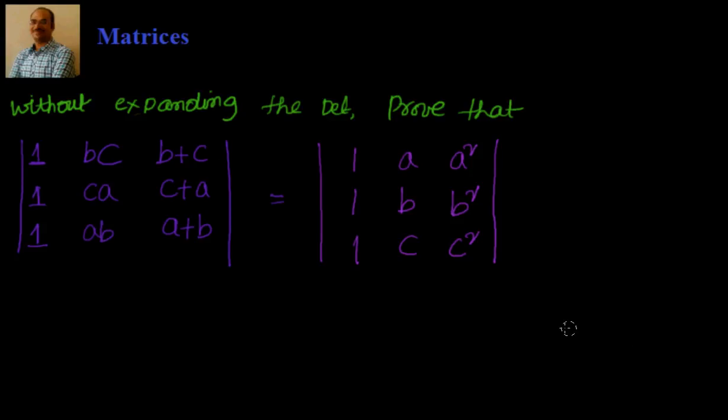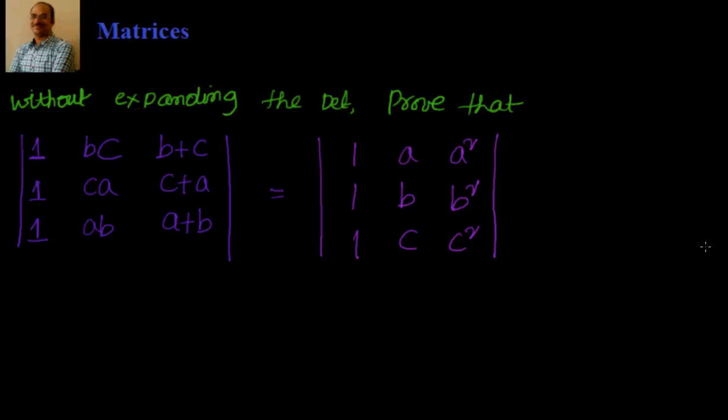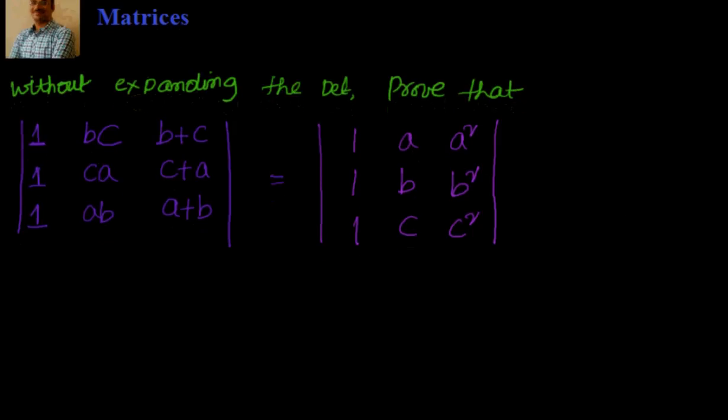What we have to prove? We have to prove that the determinant on the left hand side is equal to the determinant on the right hand side. That means by using the properties of determinants, we should be able to convert this determinant into this particular form.